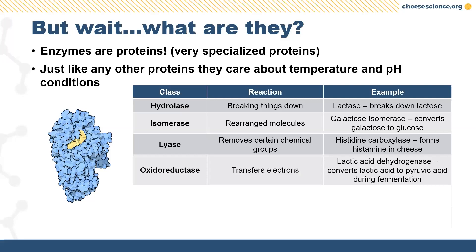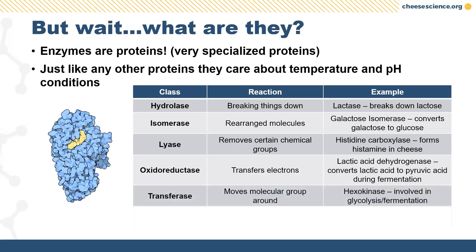Oxidoreductases are part of the metabolic toolbox of essentially any culture you use — really important for microbes to live and thrive. Specifically, lactic acid dehydrogenase is notable; many microbes produce lactic acid, but they can also break that down further in many cases. Transferases move parts of molecules around and are really important for metabolism. Glycolysis — basically the scientific word for fermentation — is the process of breaking down lactose into lactic acid, and transferases are crucial to that process.